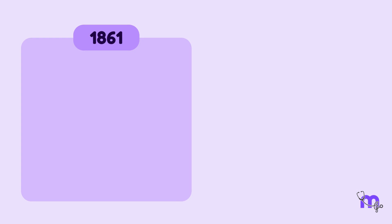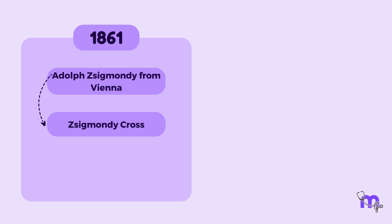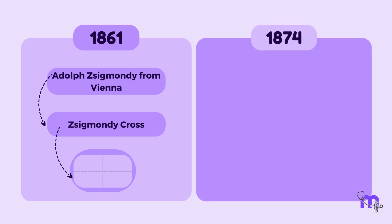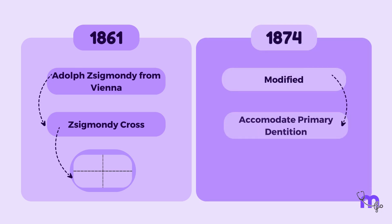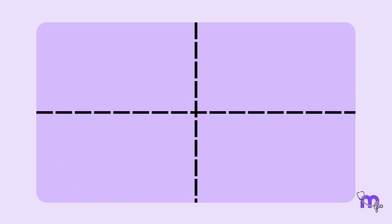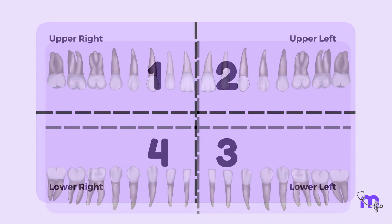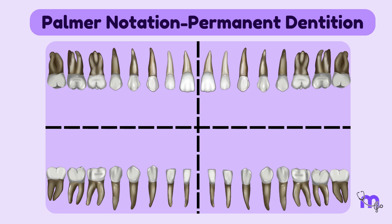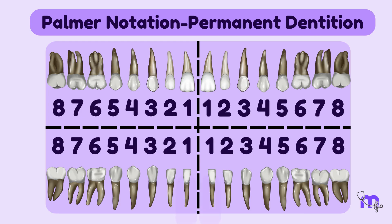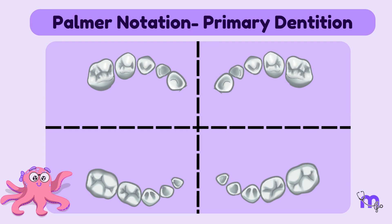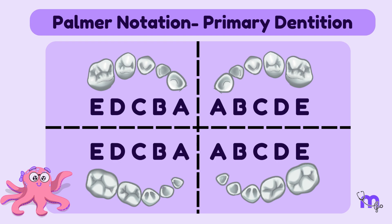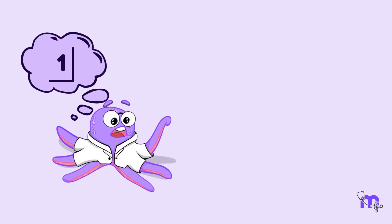In 1861, Adolf Sigmondi from Vienna introduced the Sigmondi cross to record the quadrants of tooth position. Later in 1874, it was adapted and modified to accommodate the primary dentition. In this system, the arches are divided into four quadrants: upper right, upper left, lower right, and lower left. In the permanent dentition, the teeth are numbered sequentially from one to eight in each quadrant, starting with the central incisors and ending with the third molars. In the primary dentition, uppercase letters from A to E are assigned, starting with the primary central incisor and proceeding backward to the primary second molars.